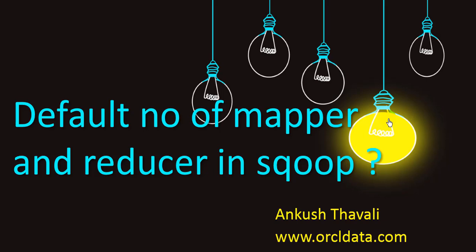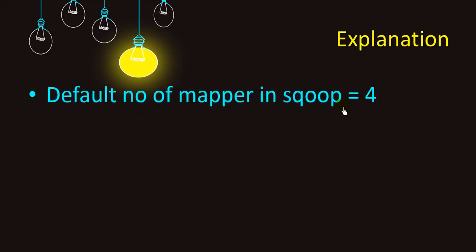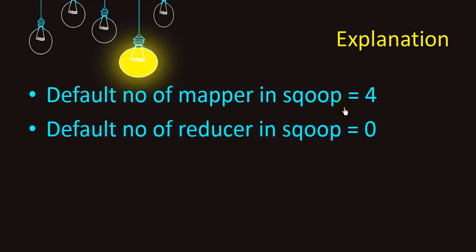Whenever we are moving or transferring data from RDBMS to the HDFS file system or Hive tables directly, using the Sqoop ecosystem, the default number of mappers will be 4. So if you are not explicitly mentioning the number of mappers, it will default to 4 mappers, and the number of reducers will be 0.